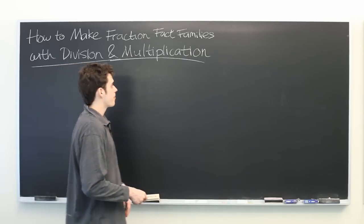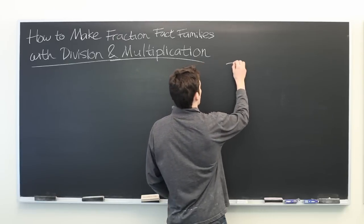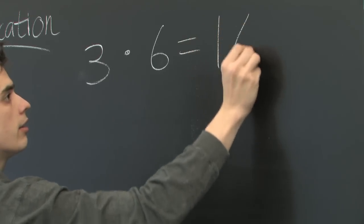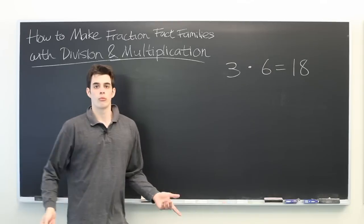To make a fact family, we'll start with a very simple mathematical fact. For example, we'll say 3 times 6 is equal to 18. Easy enough.